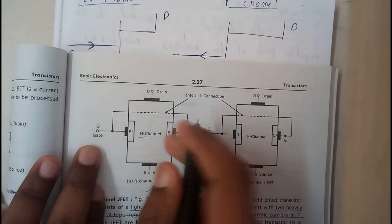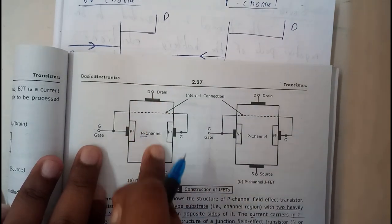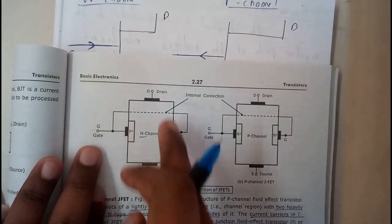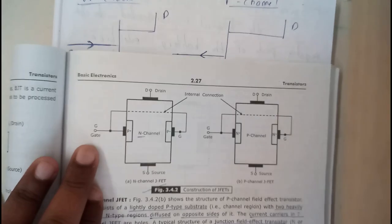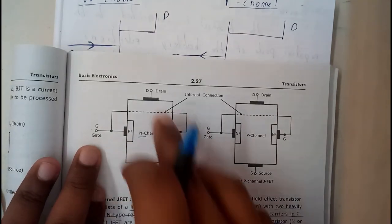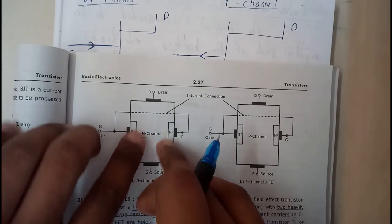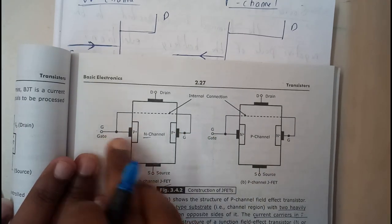An n-channel JFET will be having the majorly occupied place as n-channel, and this is the main place where the current flows. This is an n-channel with two P-types attached beside, and these two will be connected to create drain and source.